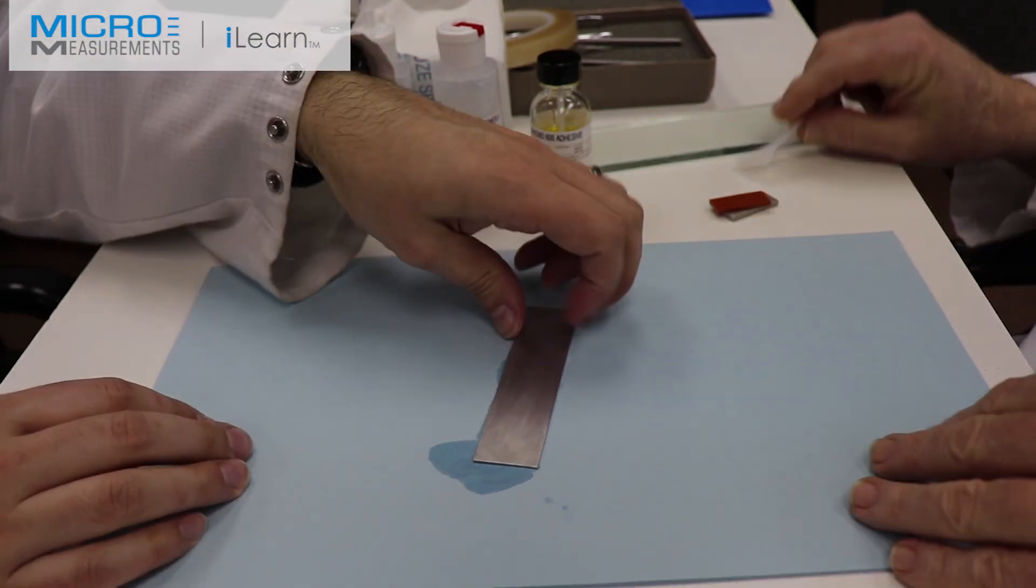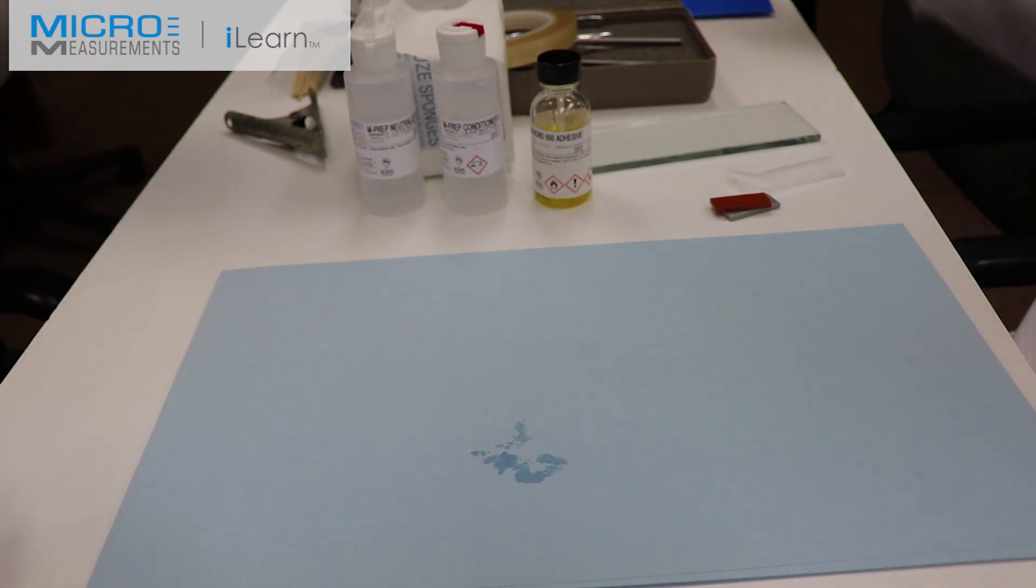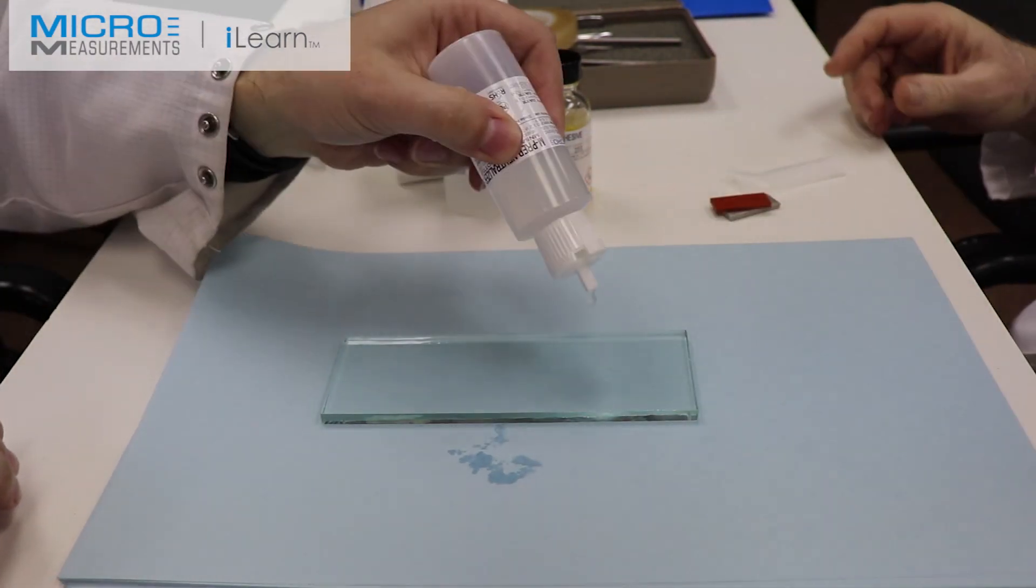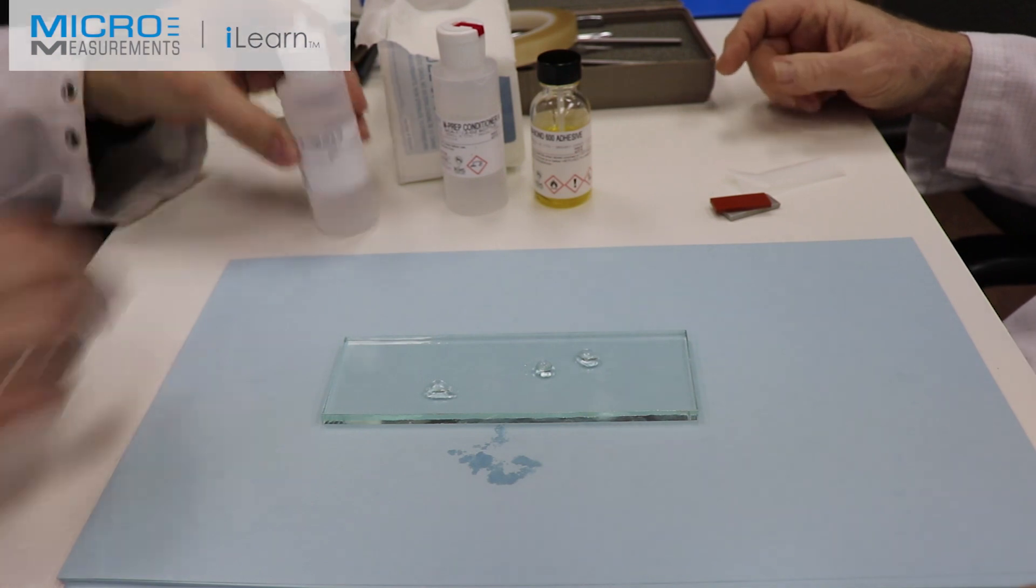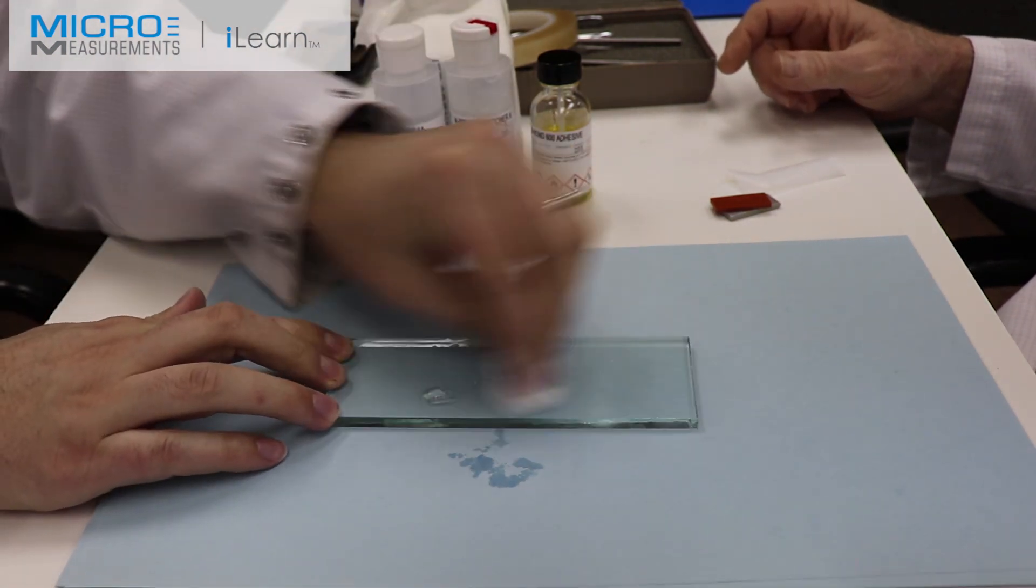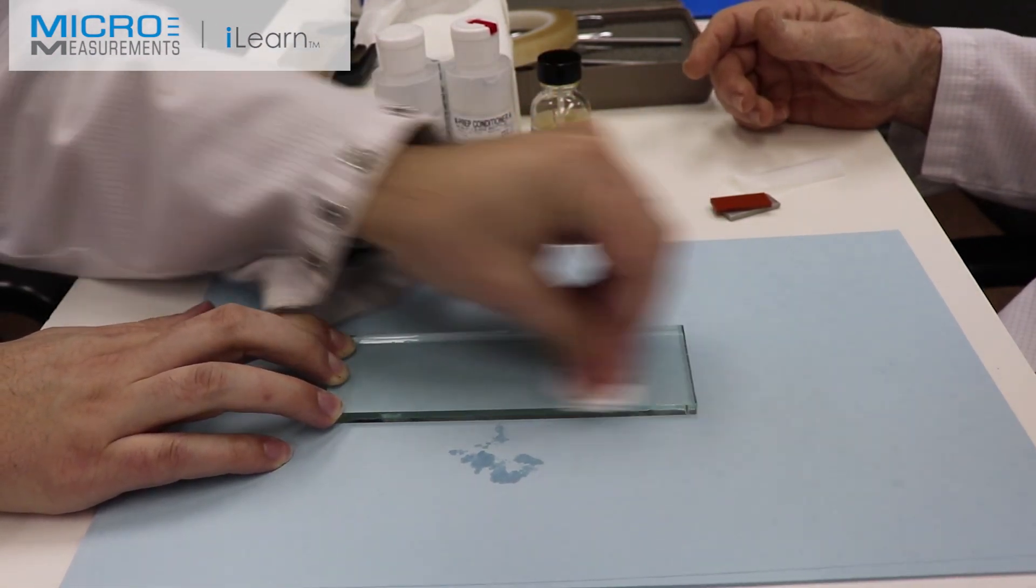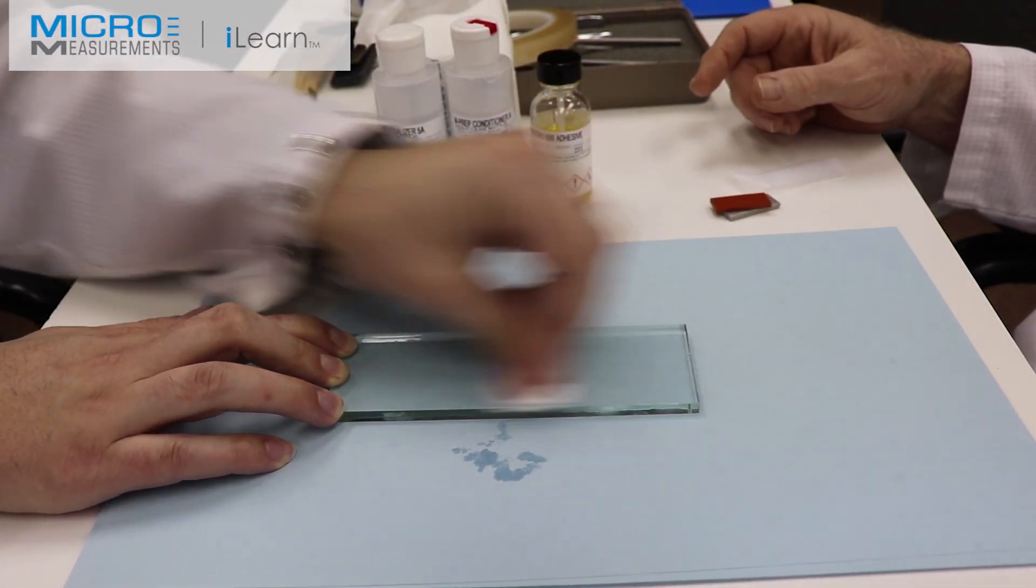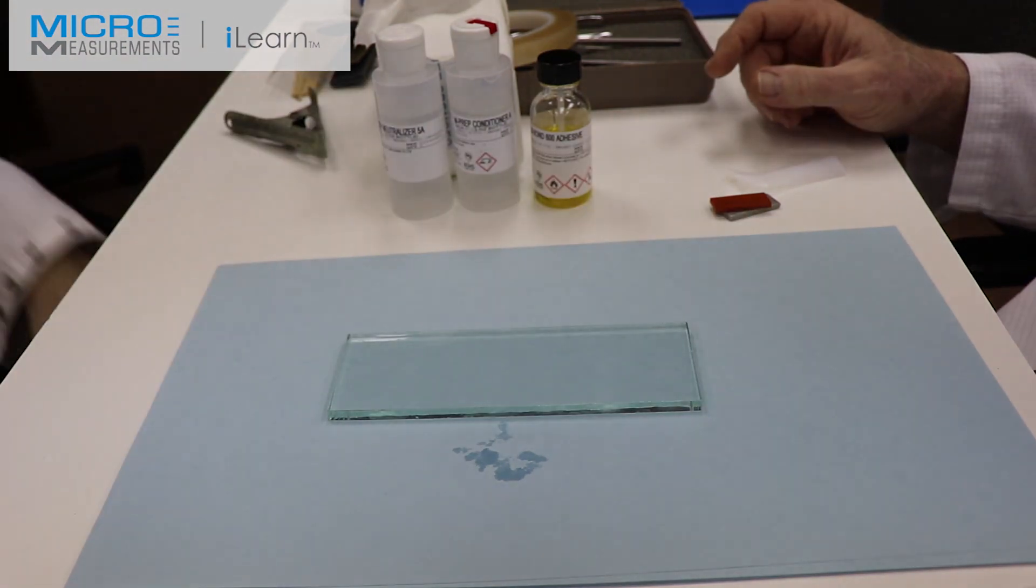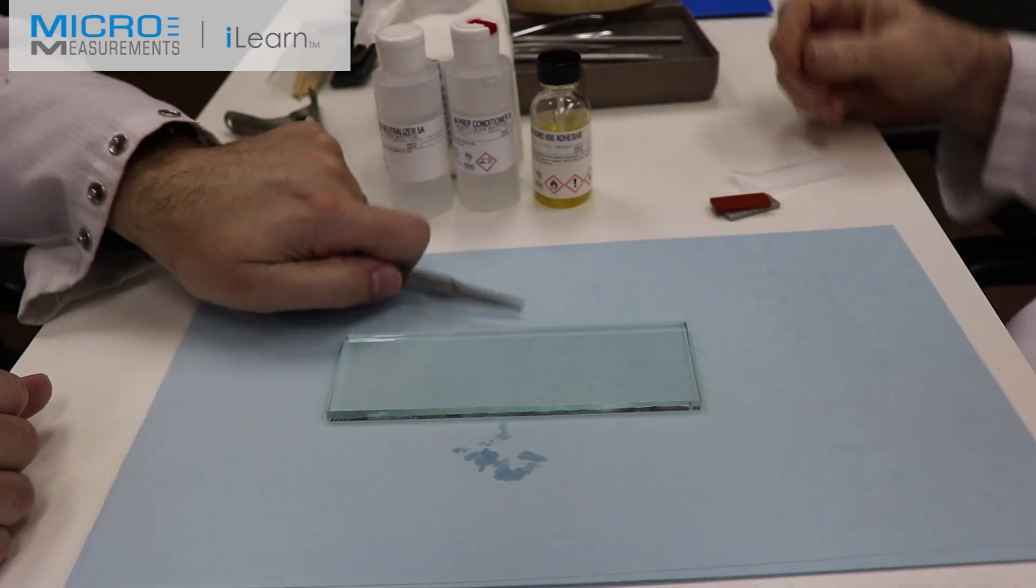He's now going to set his beam somewhere out of harm's way. We'll take our glass plate, and using the Neutralizer 5A and a clean dry gauze sponge, he's going to scrub that plate to remove any contamination. Glass plate is good because it's easy to see if it's dirty and easy to get it clean. He'll also clean the business end of his blunt nose tweezers.